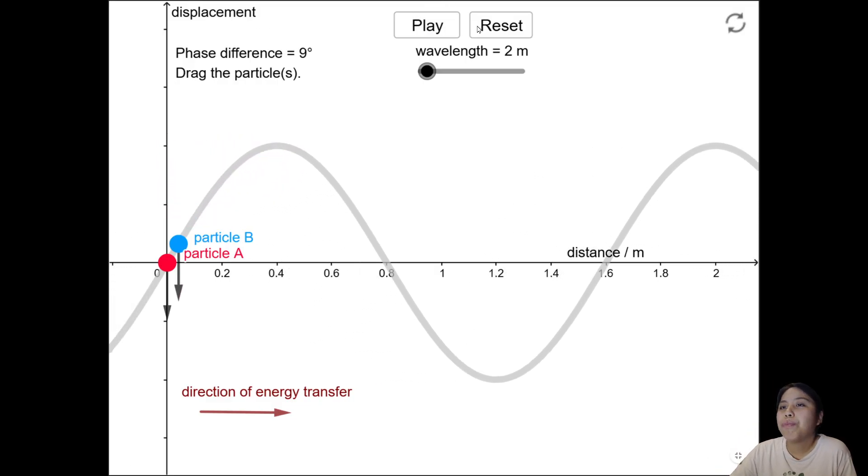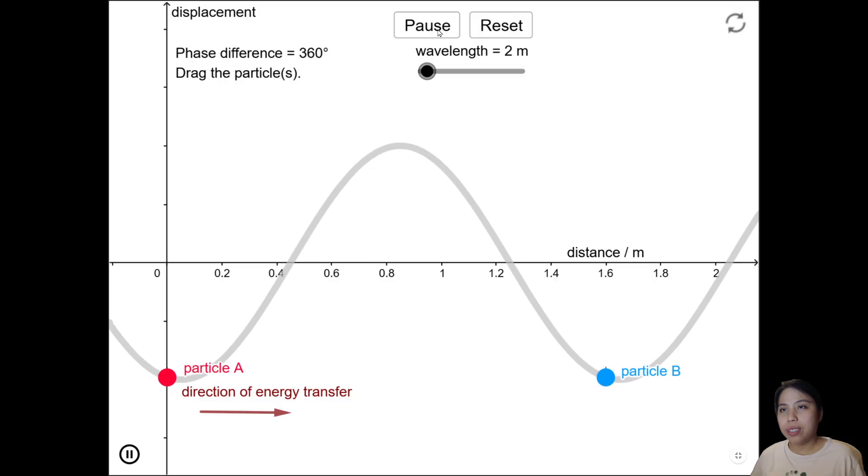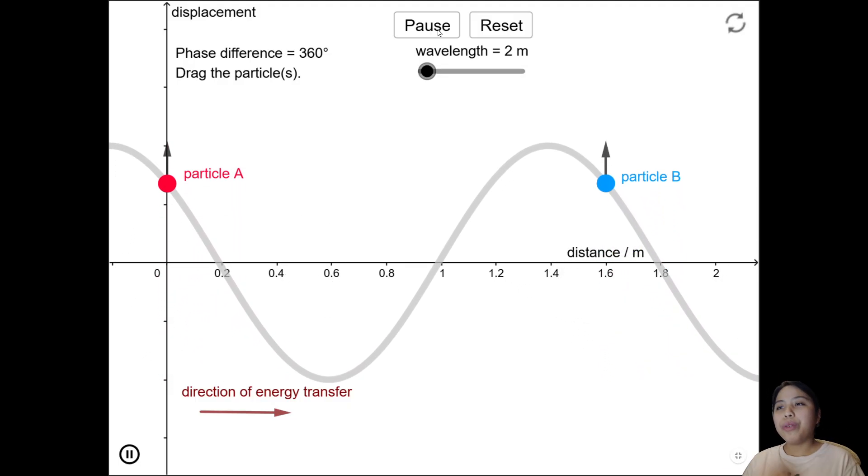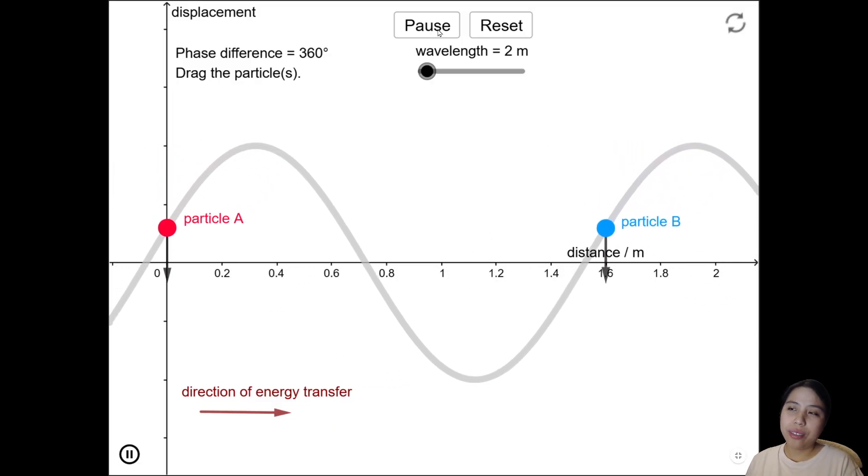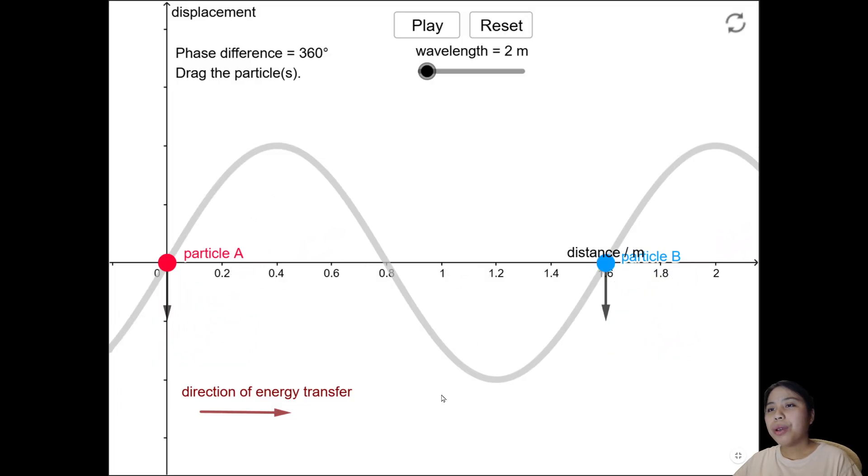Now let's move particle B like maybe one cycle away. So one cycle will be all the way until here. See, I should get 360 for my phase difference because it's one cycle away. Let's hit play - and in phase, 360 is also equivalent to zero, starting a new cycle. So they go up together and they go down together. I could stare at this all day, okay, but we got to continue on.